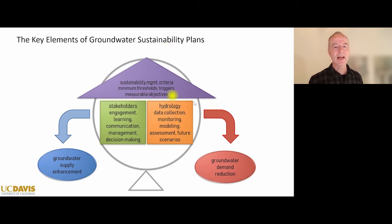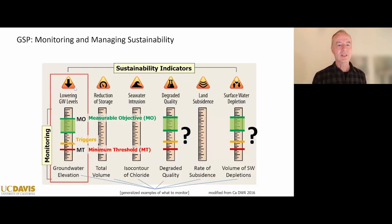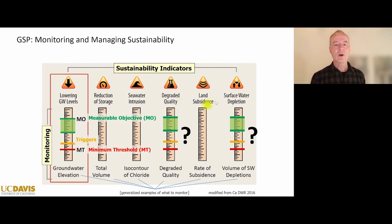Ultimately, much of it is driven by what I call a fever thermometer — what we call sustainability management criteria — essentially a system of rulers or fever thermometers where we identify unhealthy states, a minimum threshold below which we are unhealthy, and a healthy state called a measurable objective. In California this applies not only to groundwater levels or groundwater storage, but also explicitly to preventing seawater intrusion, preventing further degradation of water quality, avoiding land subsidence — one of our most costly consequences of groundwater overdraft — and recognizing the linkage between groundwater and surface water.